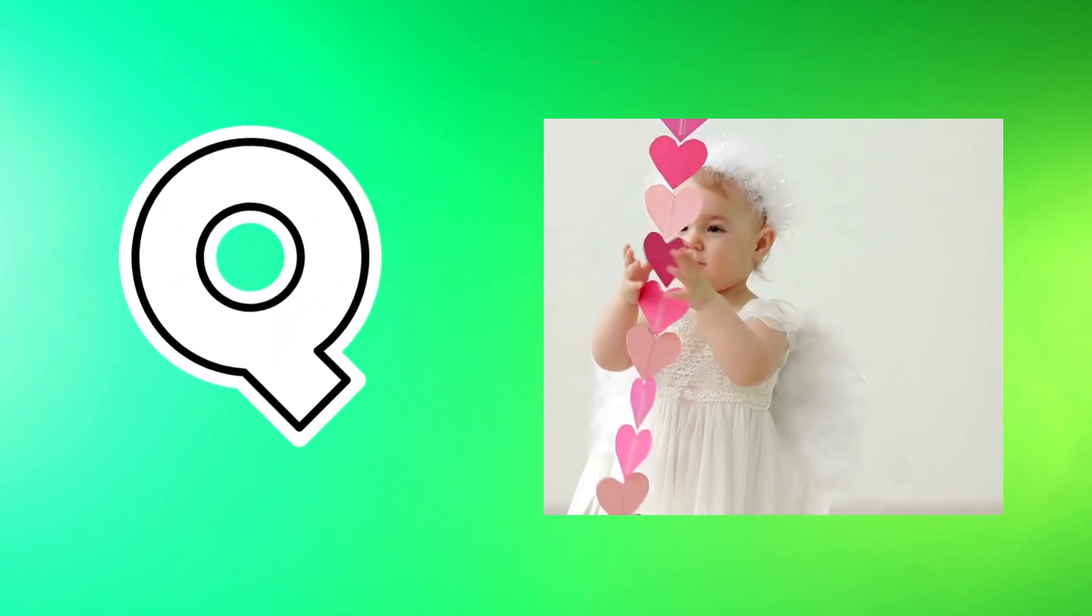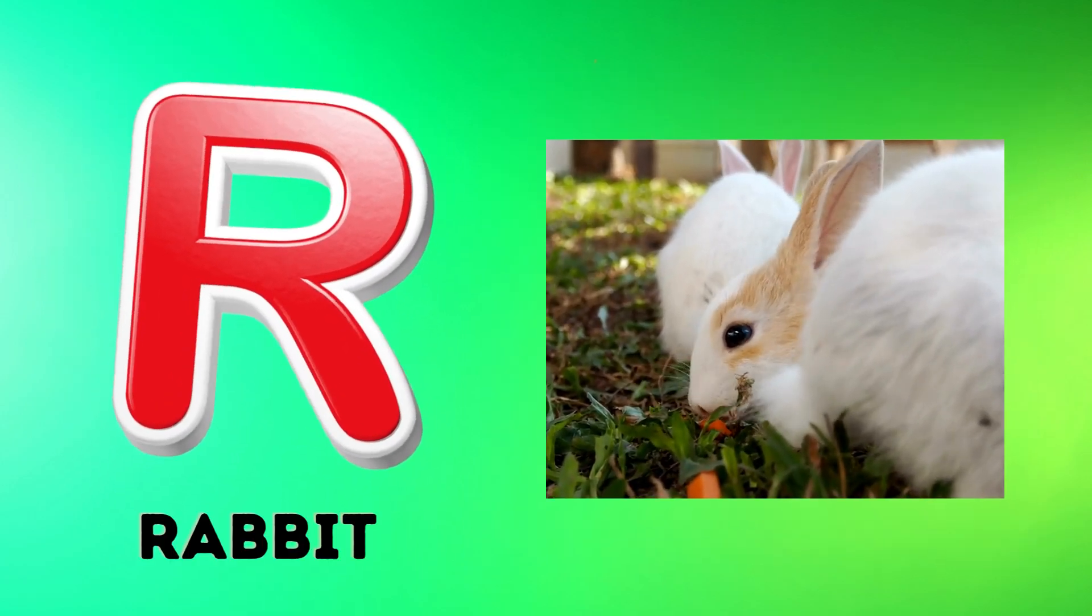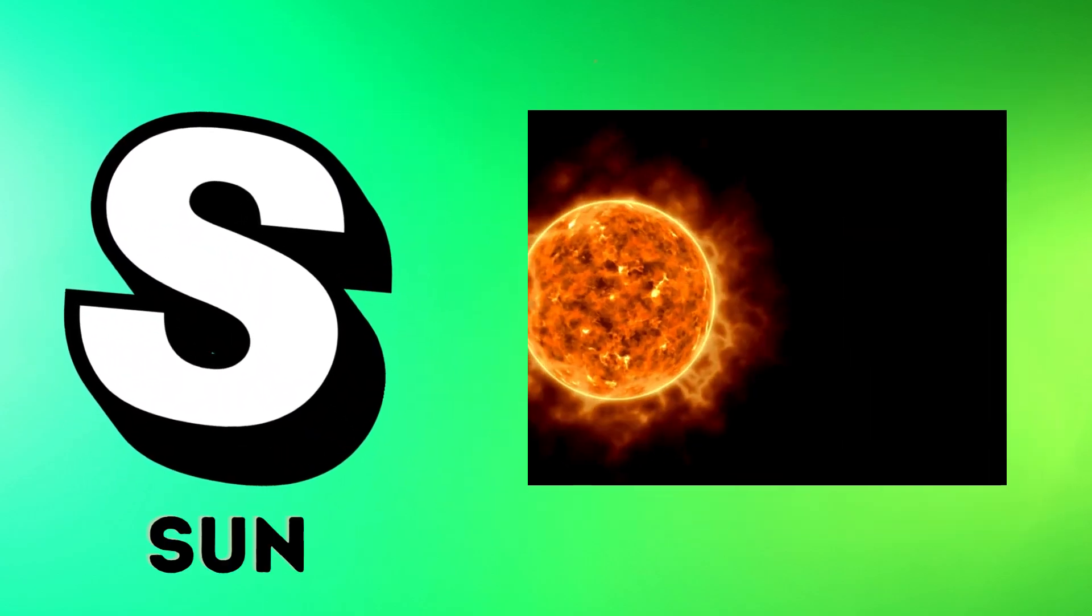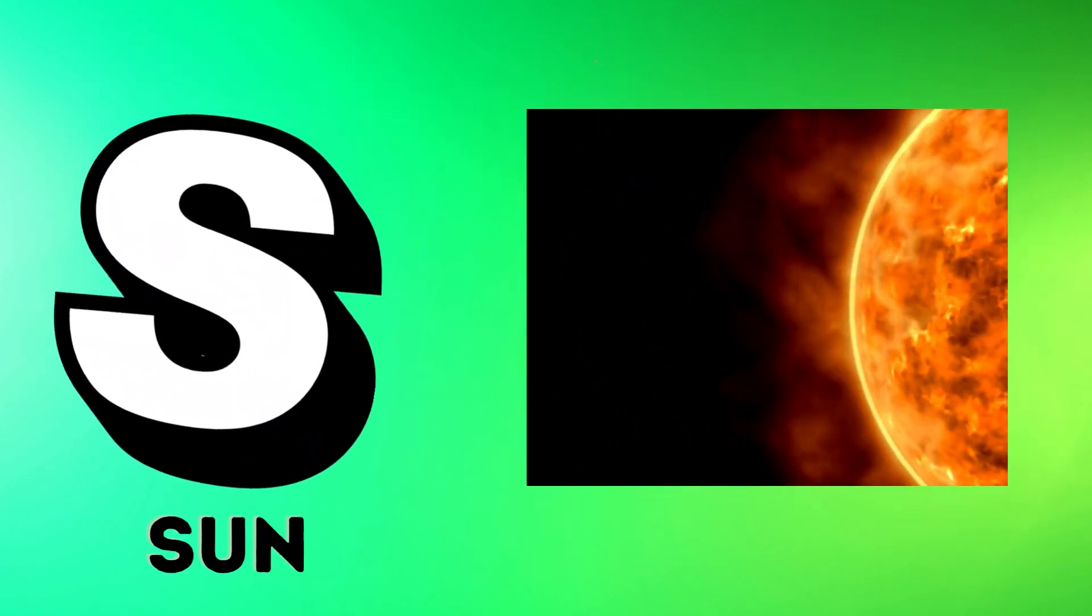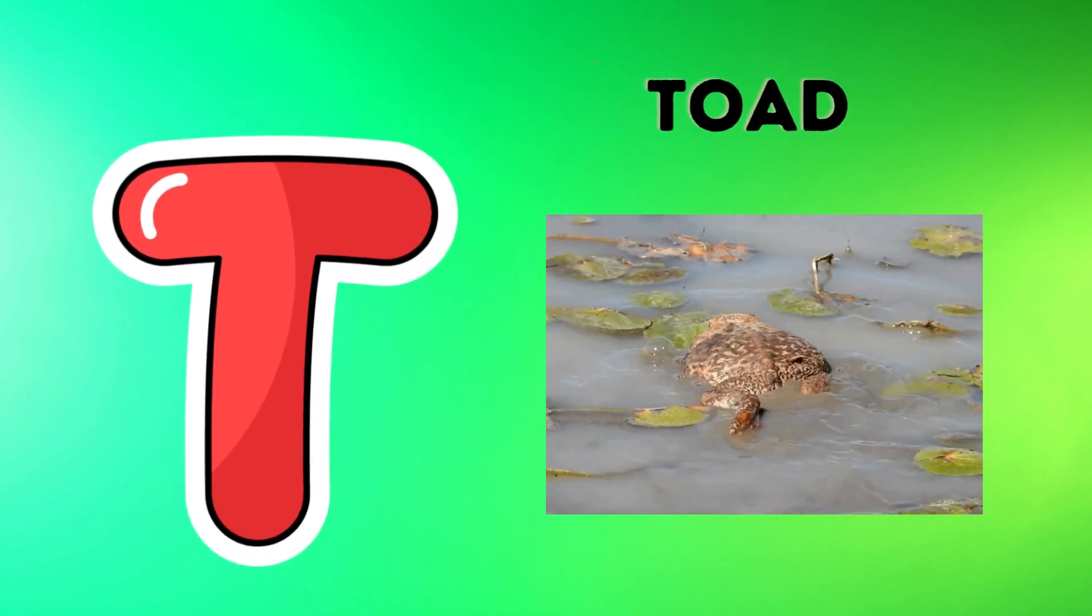Q is for queen, q-q-queen. R is for rabbit, r-r-rabbit. S is for sun, s-s-sun. T is for toad, t-t-toad.